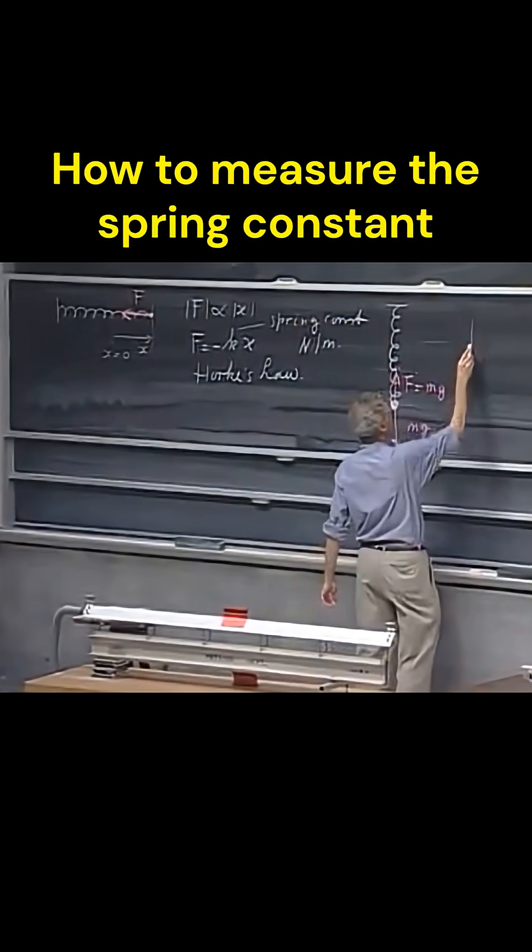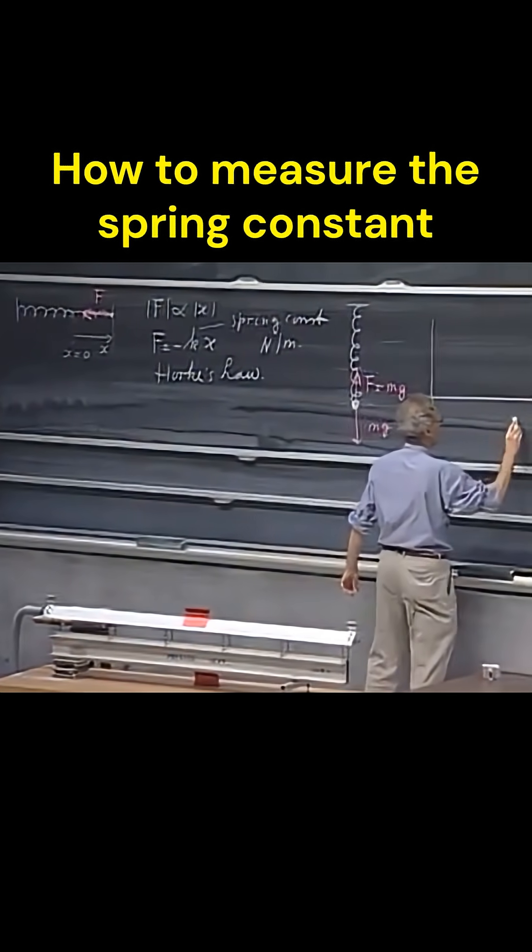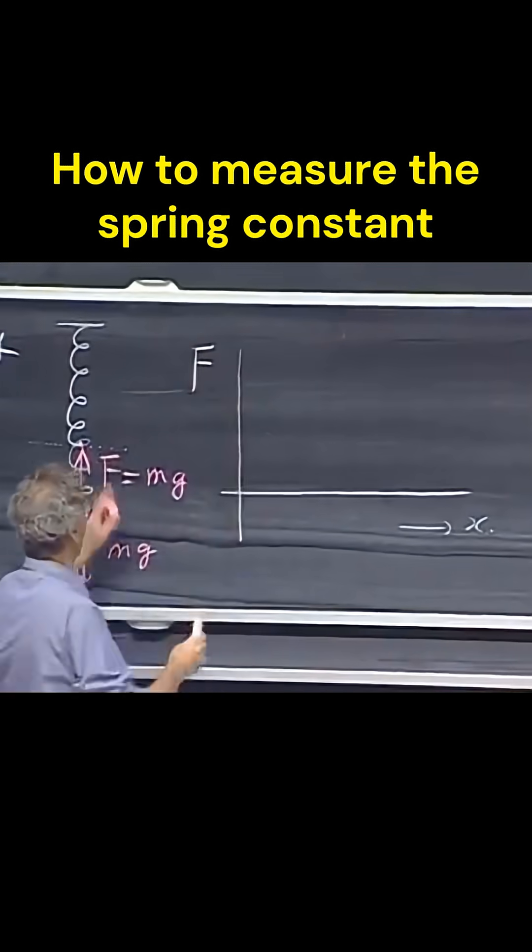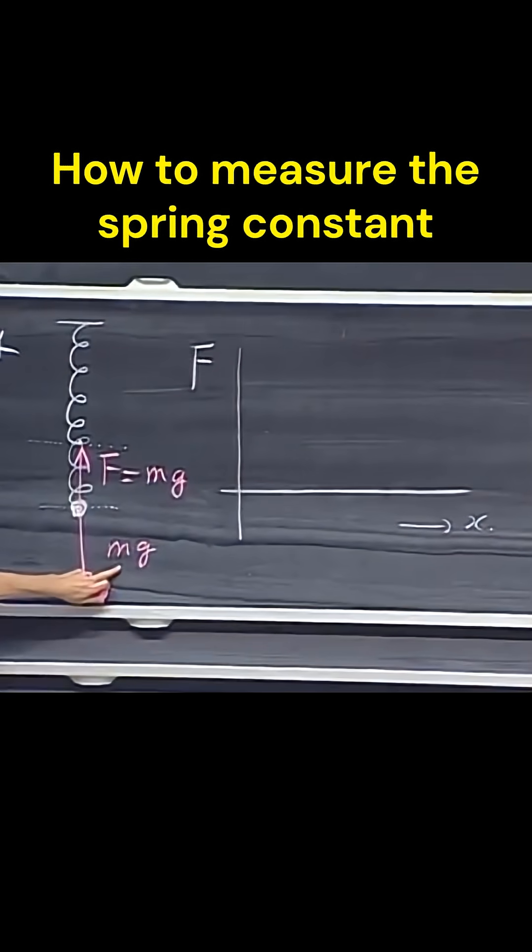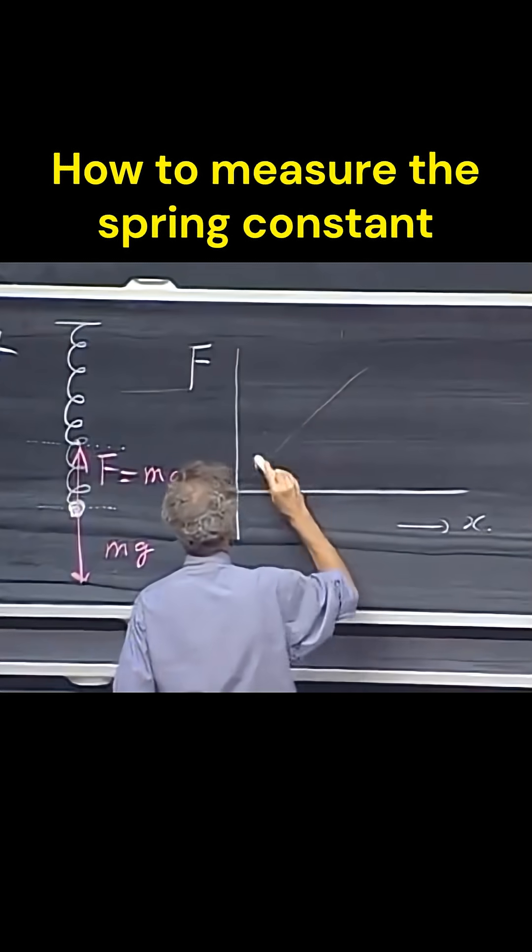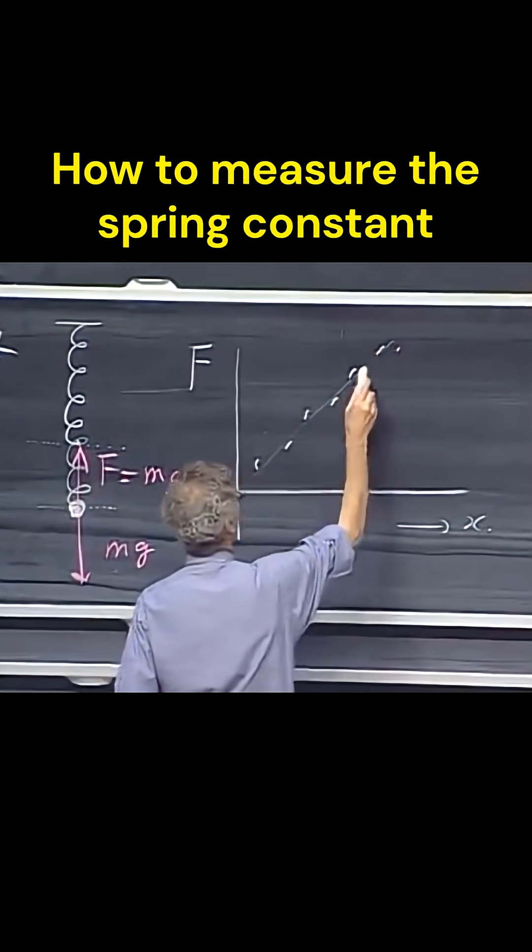And so I could now make a plot whereby I could have here x and I could have here this force f, which I know because I know the masses. I can change the masses, I can go through a whole lot of them, and you will see data points which scatter around a straight line.